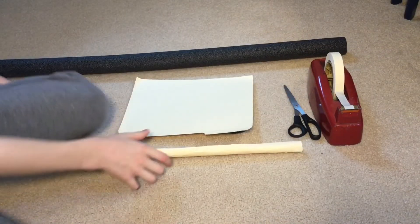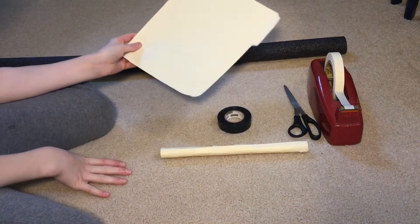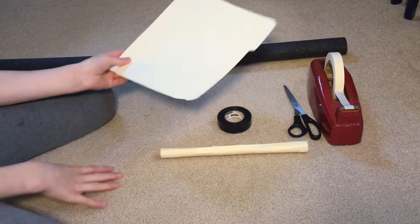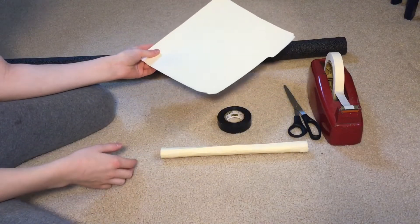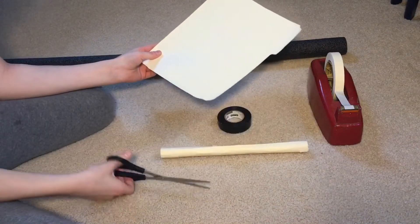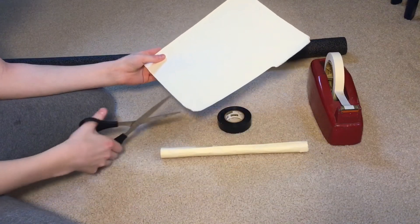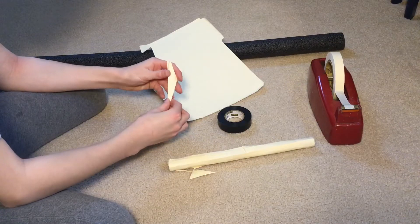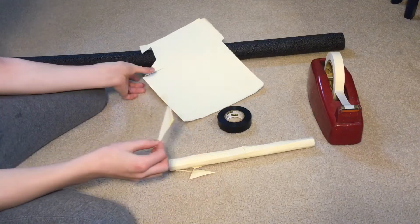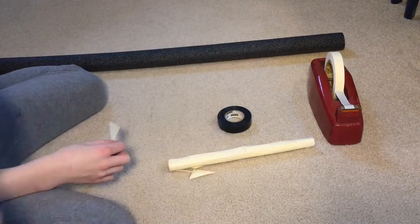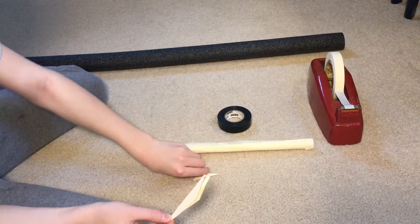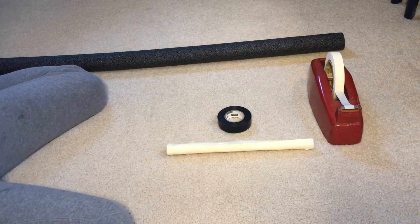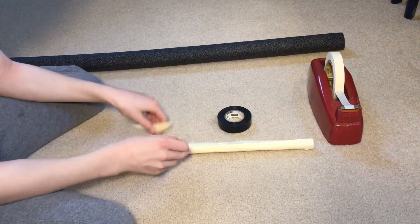Once you have your tube rolled up, the next thing you're going to want to do is make some fins. You can choose any type of fins you would like, but I'm just going to do triangles. I've got three very close to equal fins. So now what I'm going to do is I'm going to put all my paper scraps away and I'm going to tape them on.